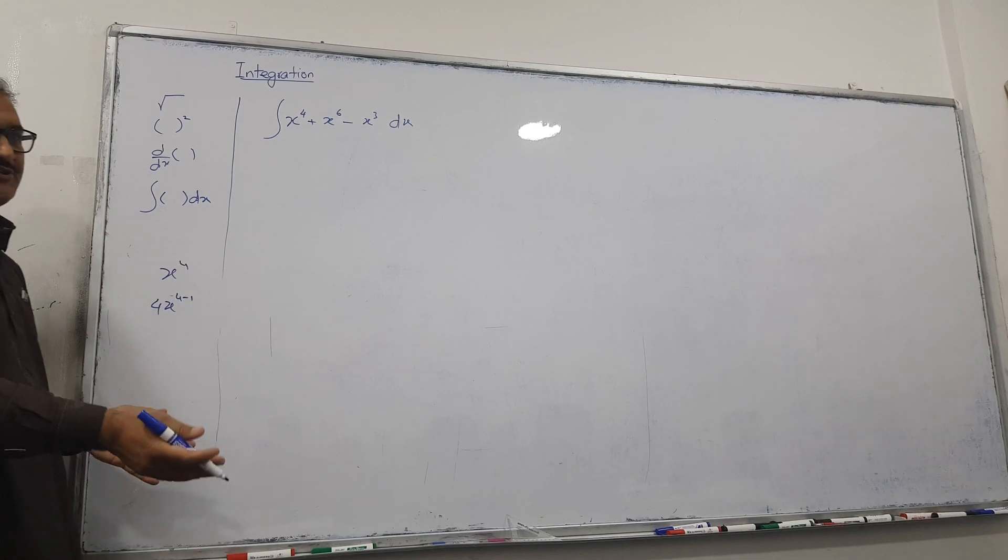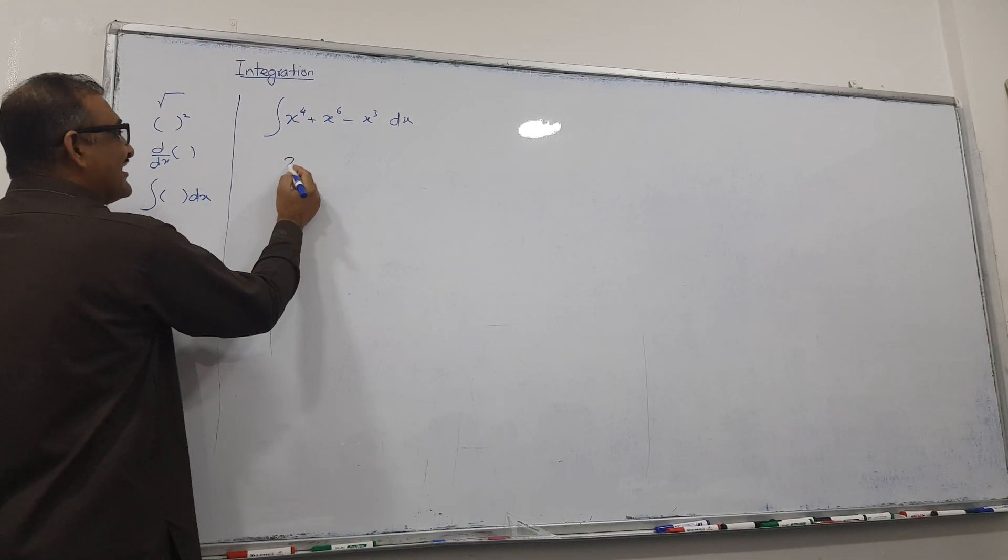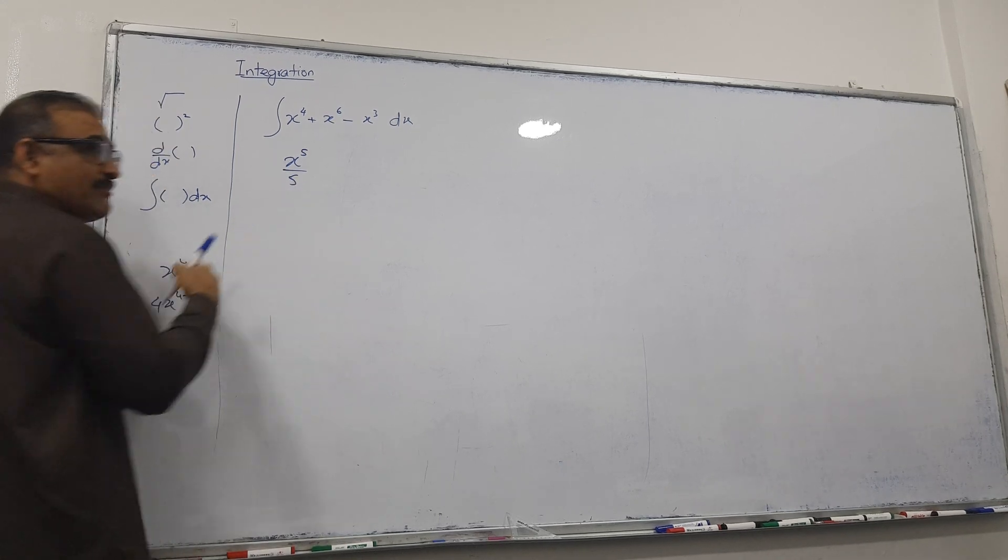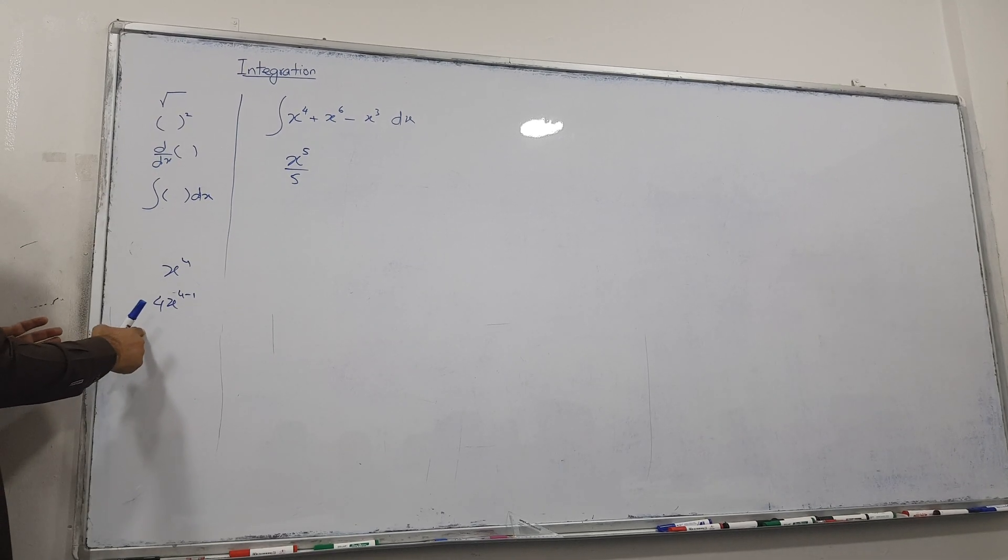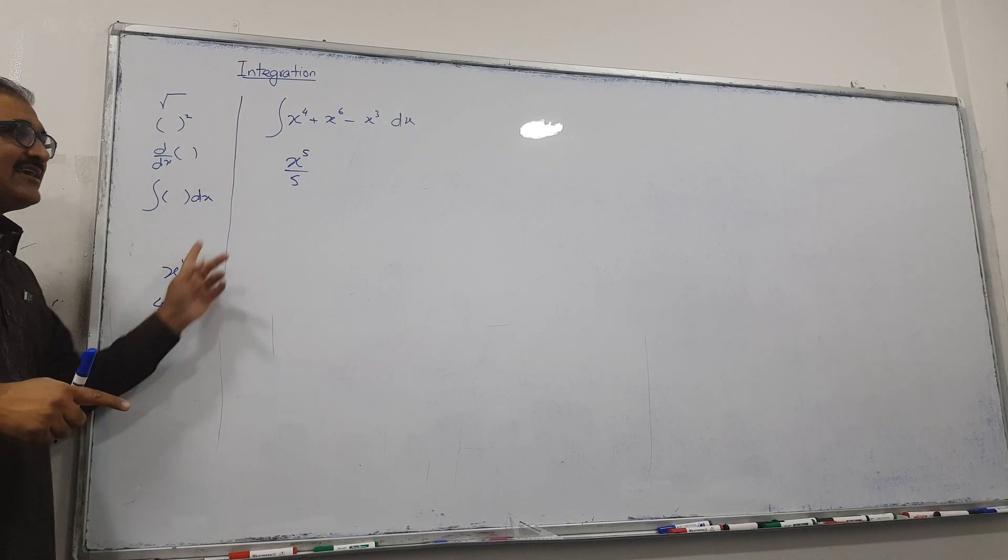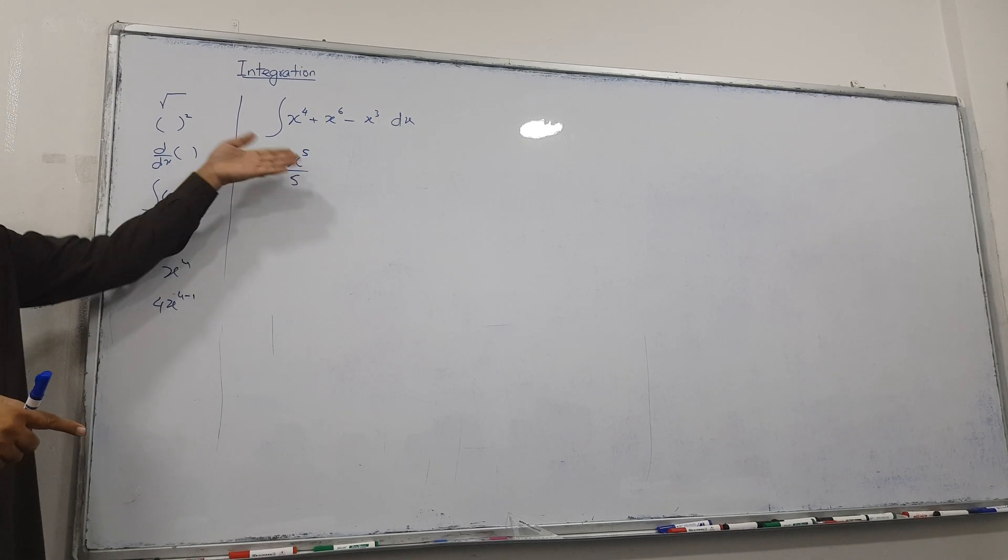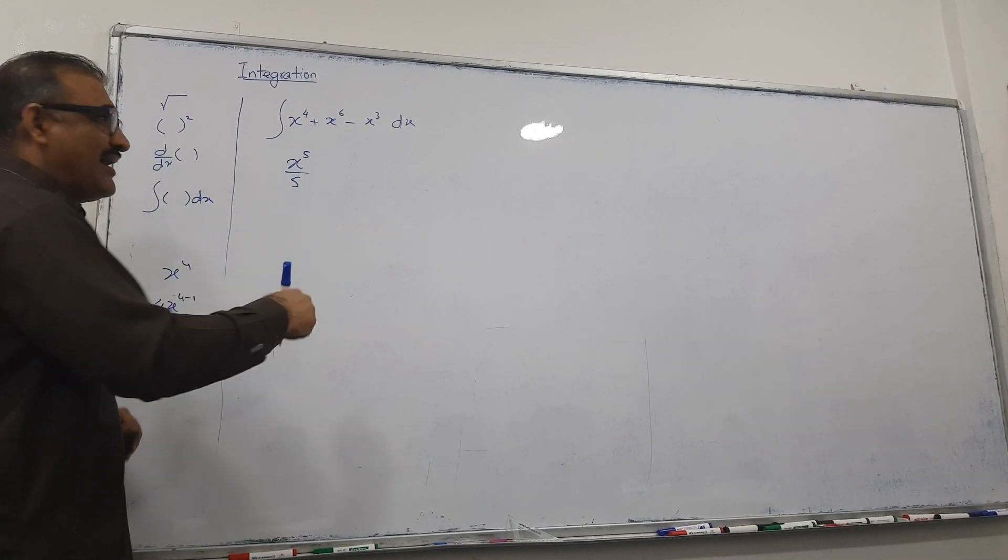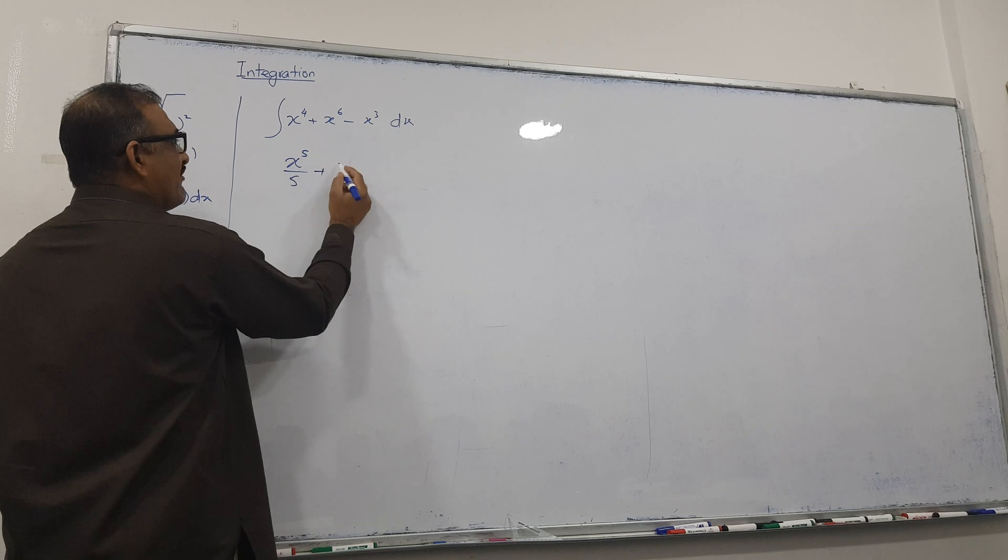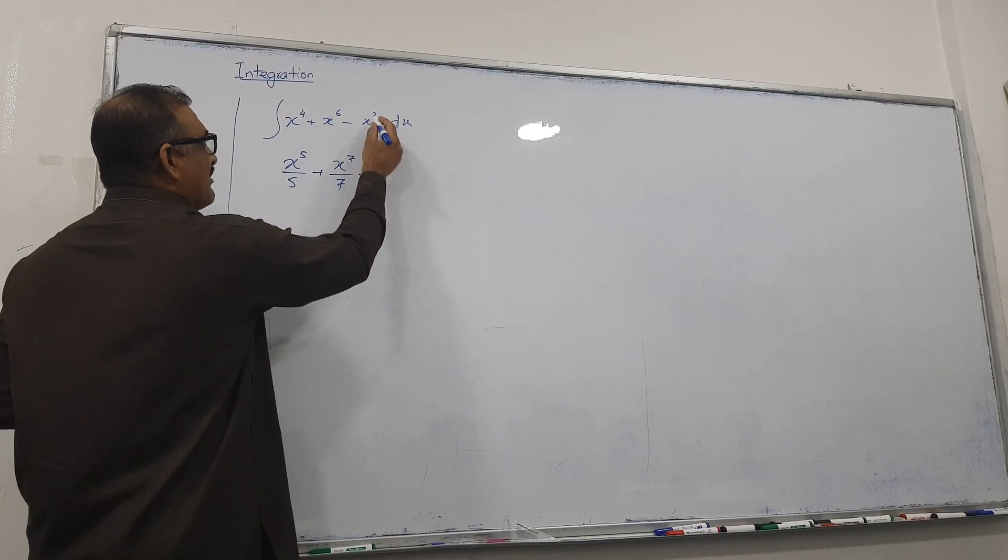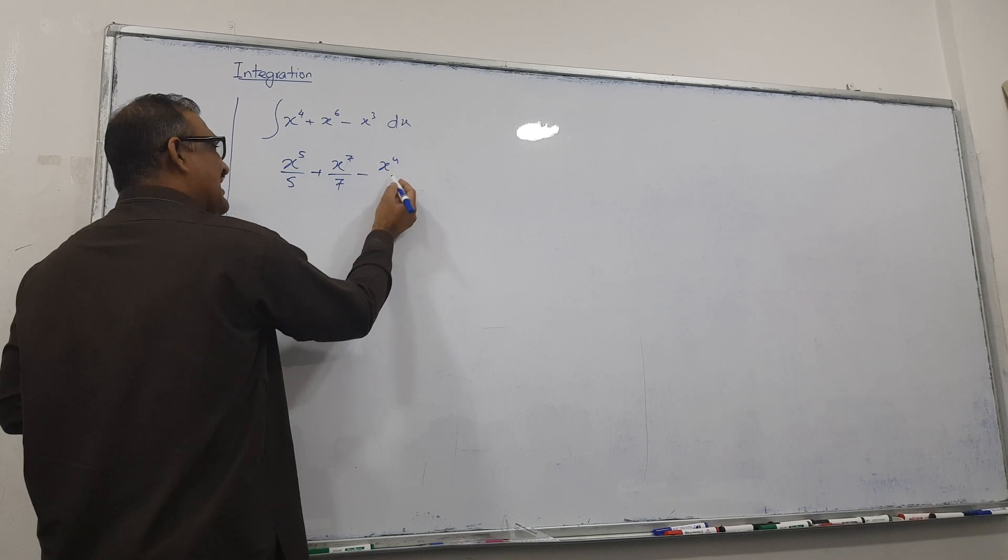Here, total reverse. First you increase power 1 and then divide. Here multiply, here divide. Here decrease, here increase. Here you do after increasing, here you do before. I think clear. Come back. So increase the power by 1, you got 7, divide by 7. Increase the power by 1, you got 4, and same number divide.